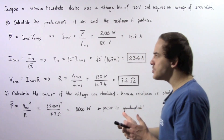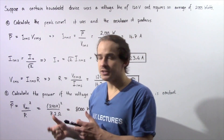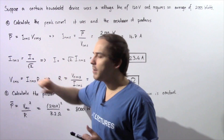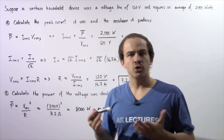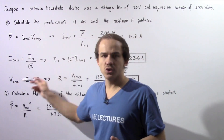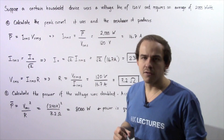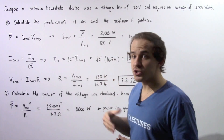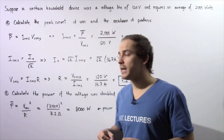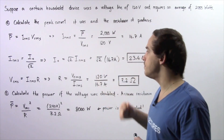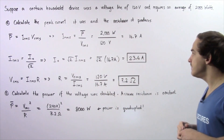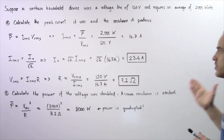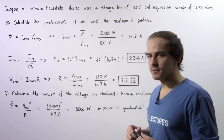Now, the relationship between the peak current I-naught and the RMS current is given by a standard equation. Rearranging and solving for the peak current, I-naught equals the square root of 2 multiplied by the RMS current, giving us 23.6 amps. That is our peak current.